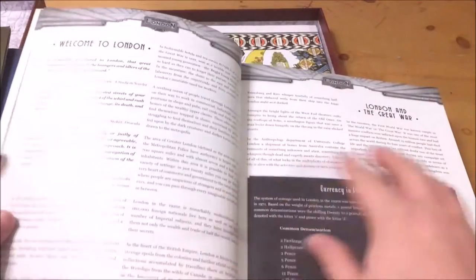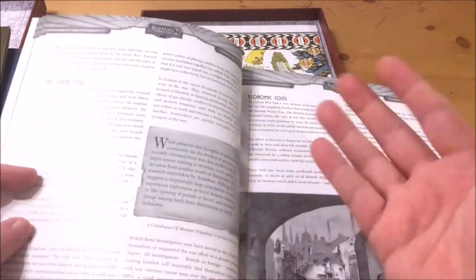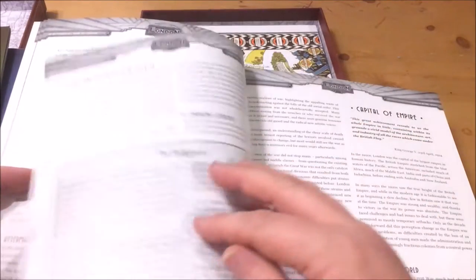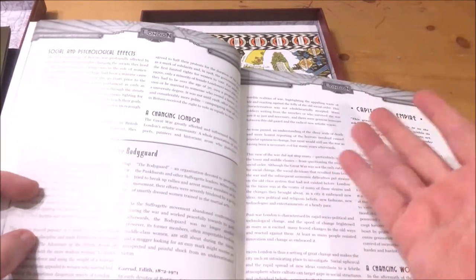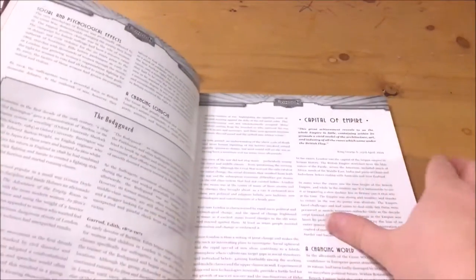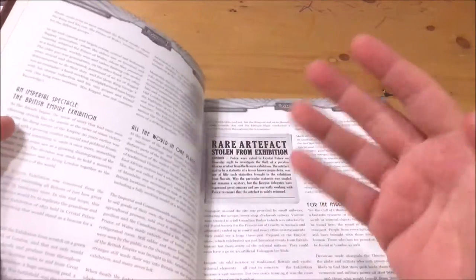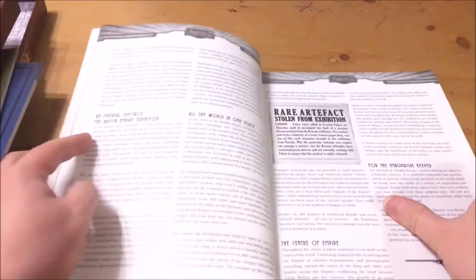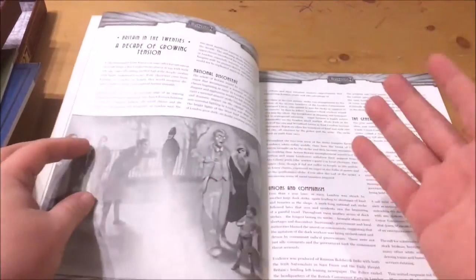It then moves on to how the war changed London including an interesting section on Baritsu, a martial art that was taught in the early 20th century there. Following that the narrative shifts to the British Empire and the wide-ranging impact it had upon the world, with great information on the British Empire exhibition of 1924 and how it could easily explain the presence of anything mythos based in London.